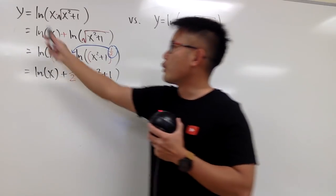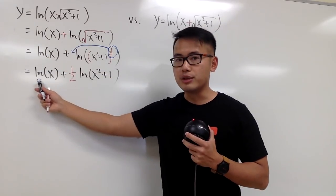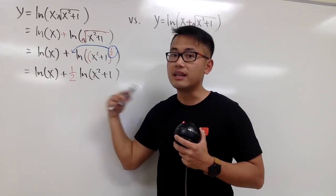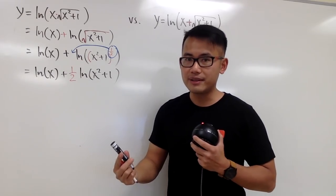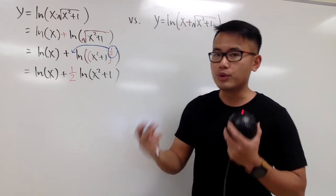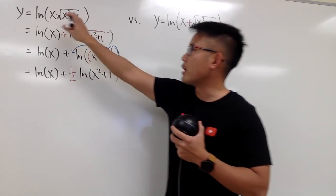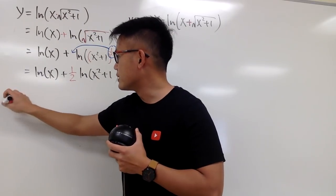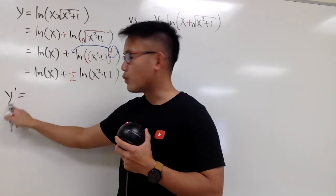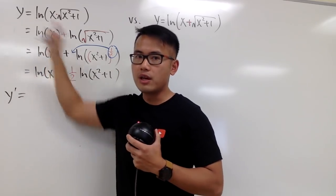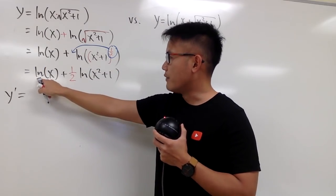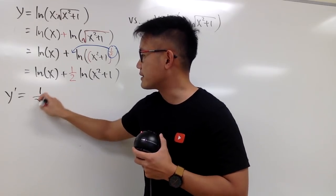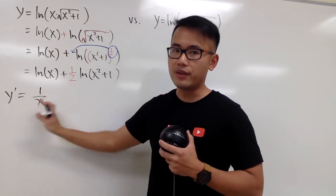So in other words, the original expression is nothing but just this now, and then we can differentiate. This is easier because we don't have to do the product rule. So we put y' for the derivative. The derivative of ln(x) is simply just 1 over x, and we are done for the first part.